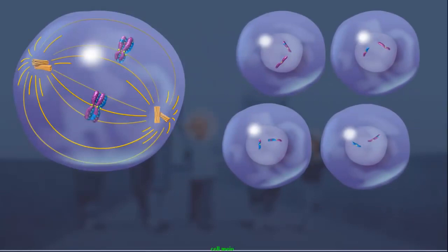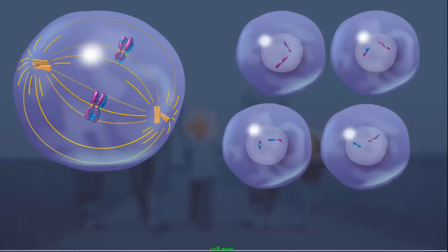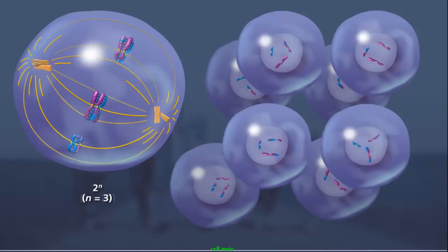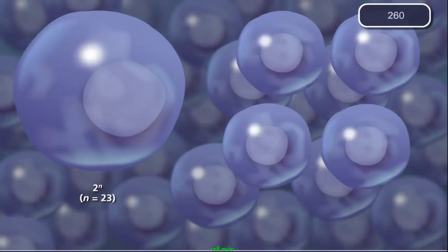This process, called independent assortment, produces four genetically distinct haploid gametes. As the total number of chromosomes increases in an organism, the number of genetically distinct gametes increases by 2 to the nth power. This means an organism with n equals 3 can produce eight unique gametes. For humans where n equals 23, there are 2 to the 23rd power unique gametes formed, or over a million different possible combinations.